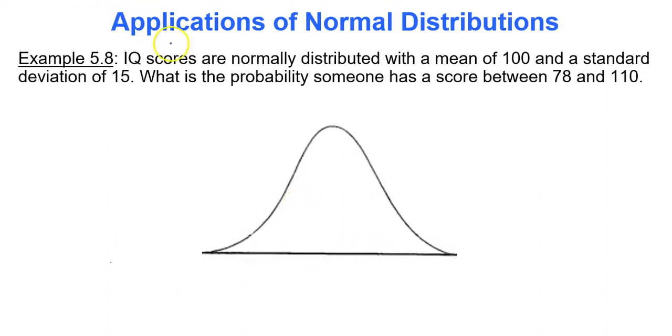In this example, we have IQ scores that are normally distributed with a mean of 100 and a standard deviation of 15. What is the probability someone has a score between 78 and 110? So I'm calculating the probability that some data value is between 78 and 110. In my picture, my bell curve, I will put the mean right in the middle. That's 100. You need to mark 78 somewhere along this x-axis on the bottom, and then you need to mark 110 somewhere. The important thing is you're trying to find the area, the probability, between 78 and 110. So we shade that region.